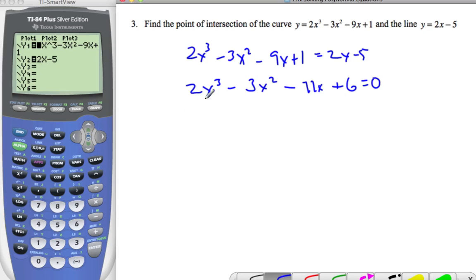And if I'm going to find factors of this to solve it, I need to consider the factors of 6 and the factors of 2. So the factors of 6 are 1, 2, 3, and 6. The factors of 2 are 1 and 2. I can consider every positive and negative combination of 1 over 1, 1 over 2, 2 over 1, 2 over 2, 3 over 1, and so on.